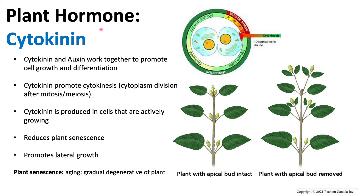Cytokinin is another plant hormone that works alongside auxin to help promote cell growth and differentiation. While auxin promotes cell growth, cytokinin promotes cytokinesis, which is the splitting part of cell division.